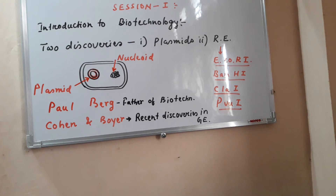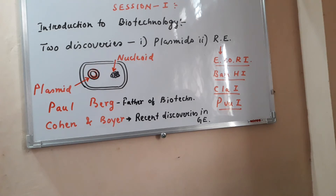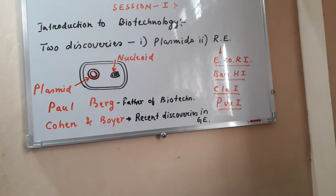The first requirement is enzymes. There are two types of enzymes used in genetic engineering: lysing enzymes and cleaving enzymes. Lysing enzymes are used to obtain DNA or plasmid from a host by breaking the cell wall. For example, lysozyme breaks the peptidoglycan cell wall of bacteria to obtain the plasmid.